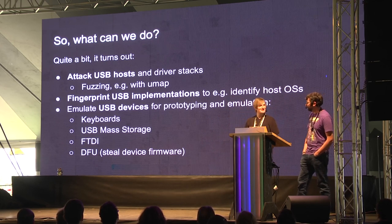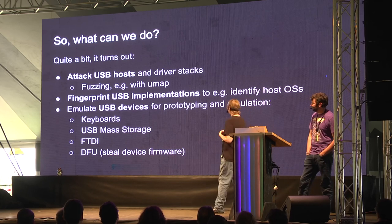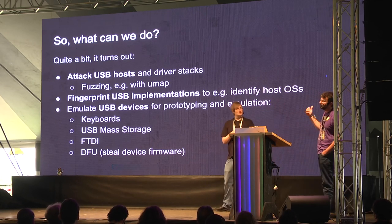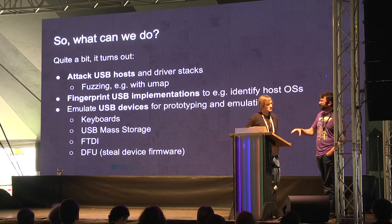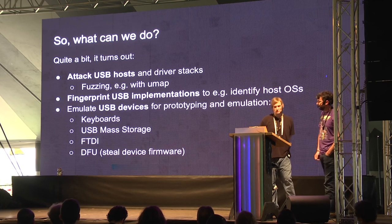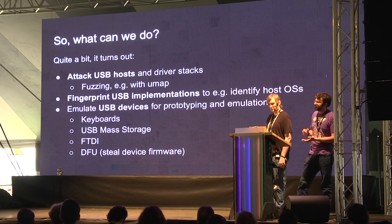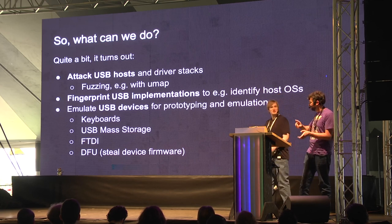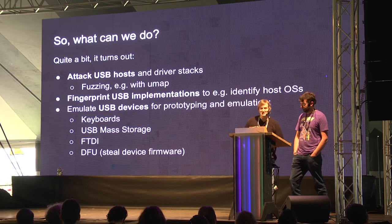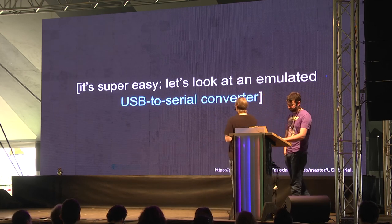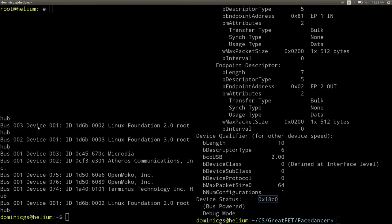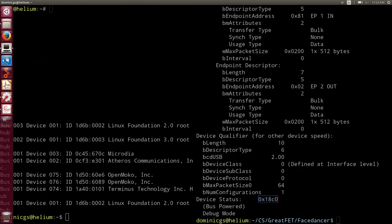Someone said to me: 'FaceDancer 2 — as long as it'll still reliably crash my PlayStation, I'll use it.' We already discussed fingerprinting USB implementations. Going back to those classes of device, there's already code to implement them in FaceDancer — we already have implementations for keyboard, serial device, FTDI device, and others. If you look at Travis's blog, there are great techniques like stealing USB device firmware by pretending to be that device and asking for firmware updates.